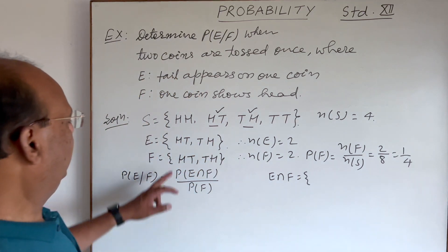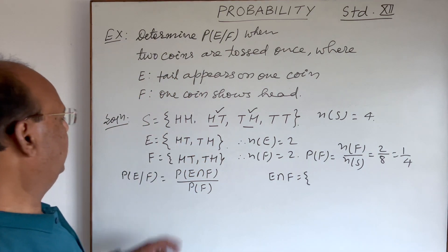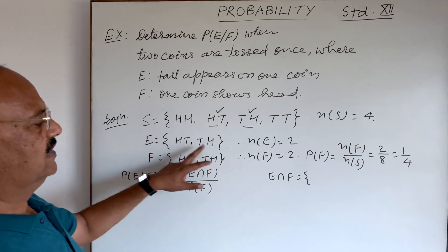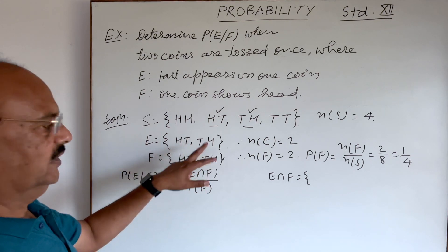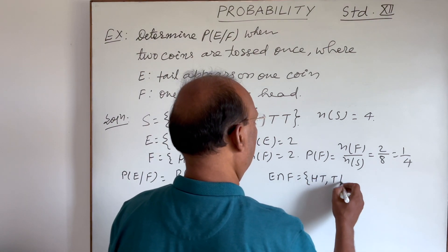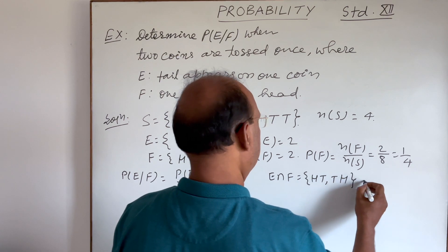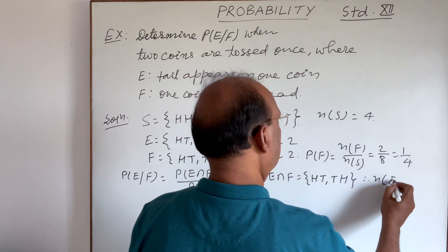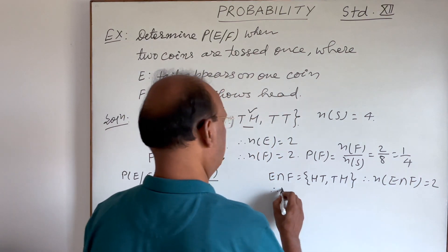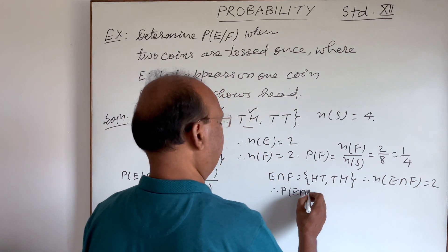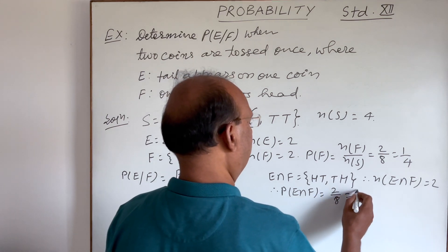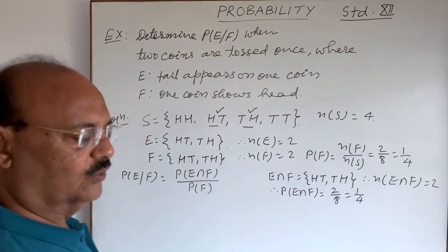So E intersection F. All the two elements are available here. So this is HT and TH. Therefore n(E∩F) is equal to 2. And therefore probability of E intersection F is equal to 2 by 8. And this is equal to 1 by 4.